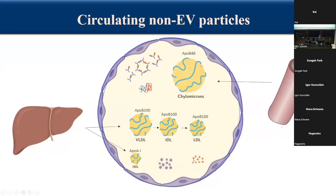When we look at the circulating particle population inside blood plasma, we realize there are many circulating non-extracellular vesicle particles. Starting with lipoproteins — these include the GI tract-derived chylomicrons recognized by the presence of ApoB48, and we have VLDL, IDL, and LDL populations, all three having ApoB100 associated with the lipid moiety, and we have HDL. The VLDL, IDL, LDL, and HDL are all derived from the liver and are very numerous in our circulation.